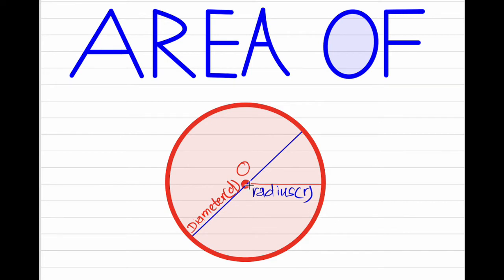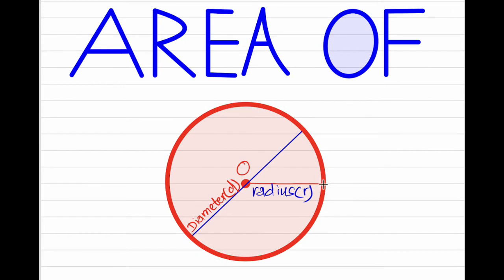This red line from the center of the circle to the circumference is called the radius, whereas the diameter is the line that goes through the center and touches two points on the circumference.